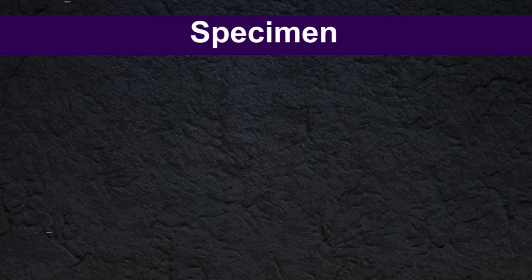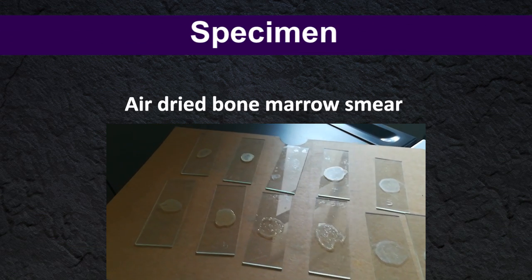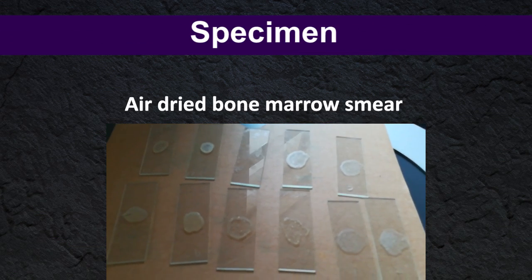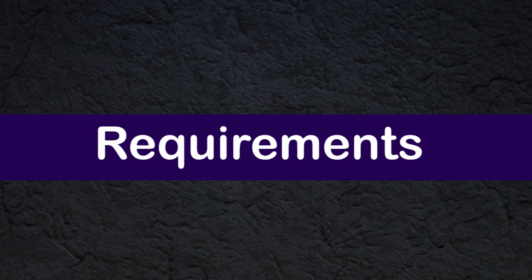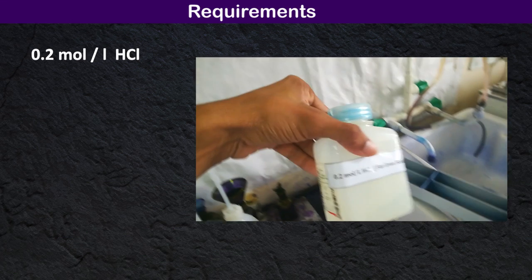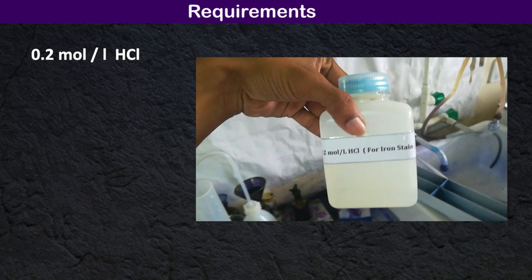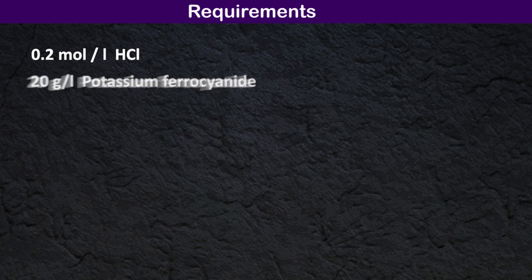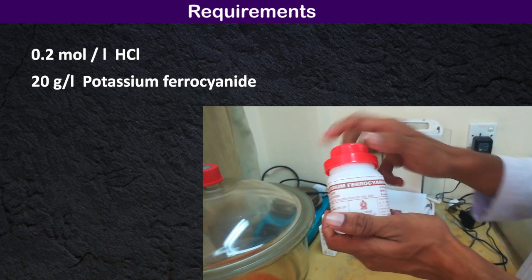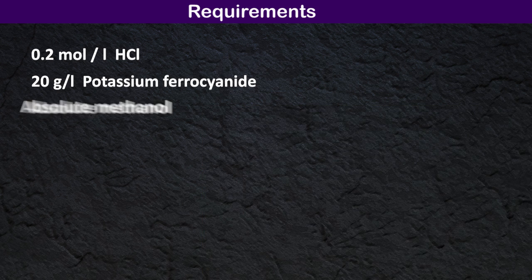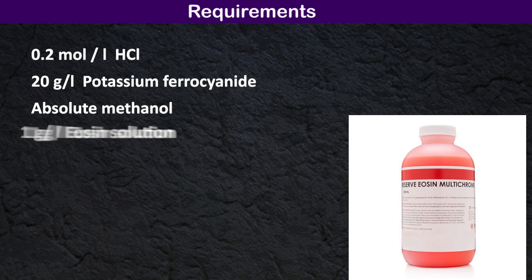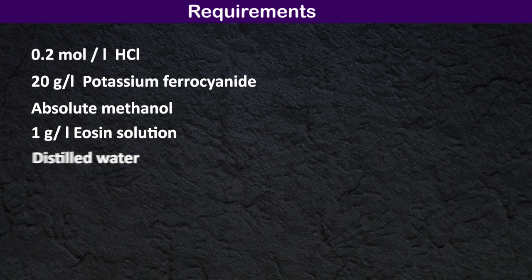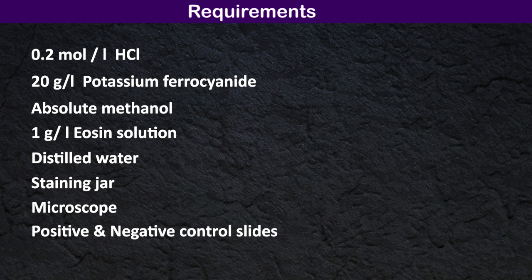Specimen: air-dried bone marrow smear. Requirements: 0.2 mol/L hydrochloric acid, 20 grams per liter potassium ferrocyanide, absolute methanol, 1 gram per liter eosin solution, distilled water, staining jar, microscope, and positive and negative controls.